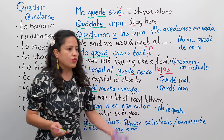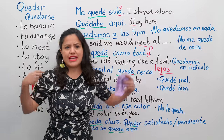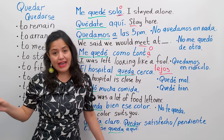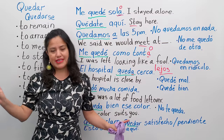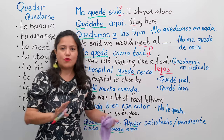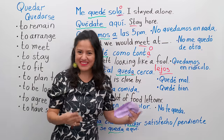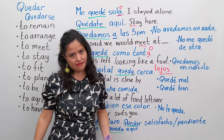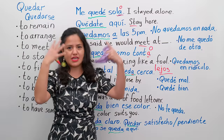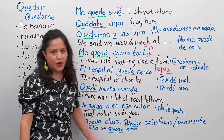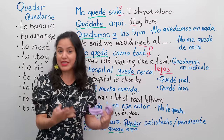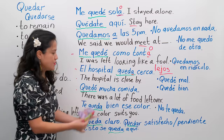¿Te queda bien esa camisa? ¿Te queda bien ese vestido? Mi mamá es una experta — my mom is an expert in saying these things. Sometimes she overdoes it, but the idea is to give people something nice so they feel happy. So you can say it honestly: te queda bien ese vestido, te queda bien esa camisa. That color suits you.